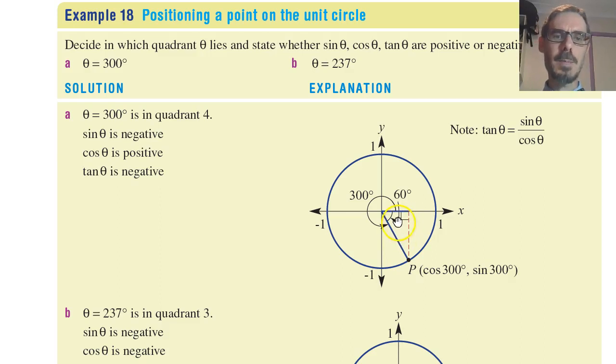Notice its reference angle is going to be 60. We'll come back to that later. In the fourth quadrant, the x-coordinate cosine is the only one that's going to be positive.